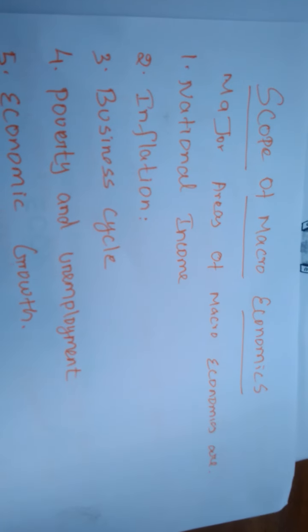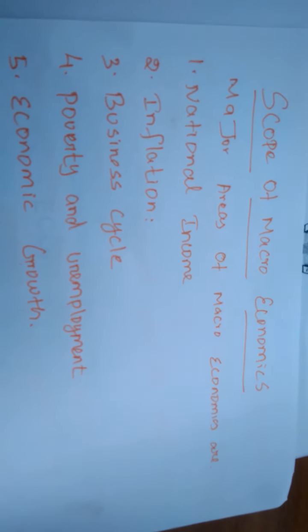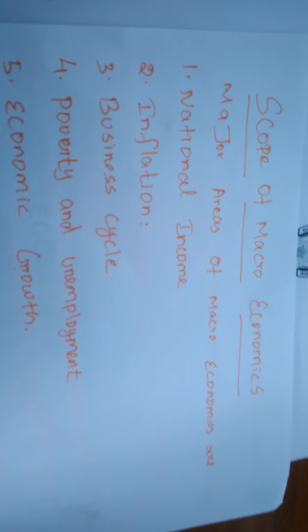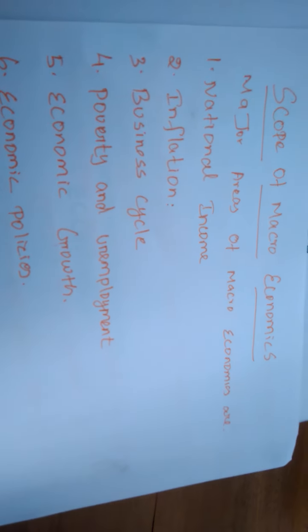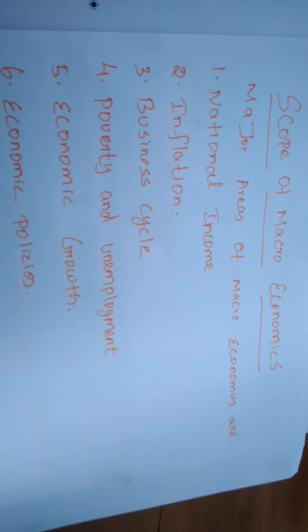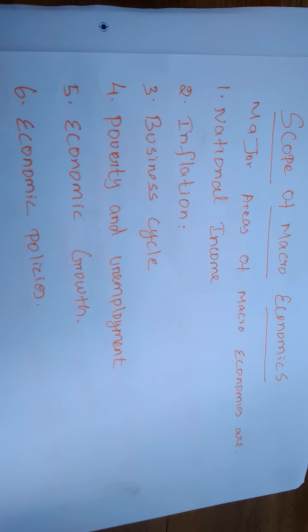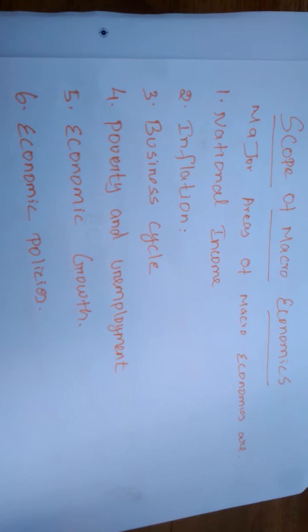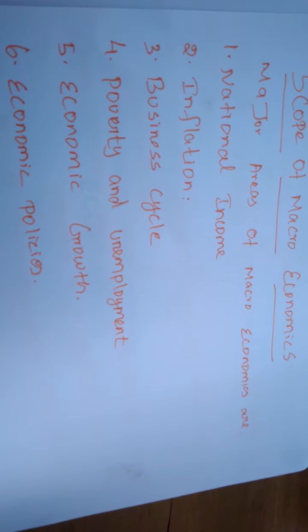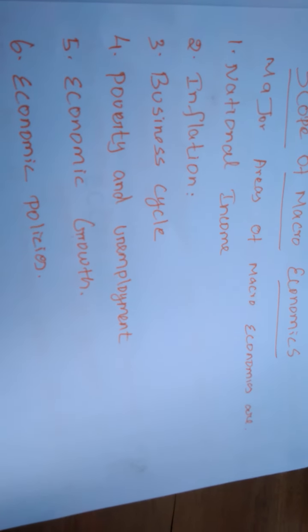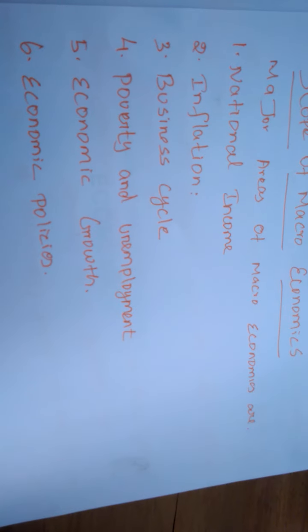Another major area of macroeconomics is inflation — which we studied well last year. Inflation means a steady increase in the general price level, or continuously rising prices. Simply, the value of money will be decreased — that is also called inflation. Estimating the general price level is done by constructing various price index numbers such as the wholesale price index, consumer price index, retail price index, cost of living index, and working class index.